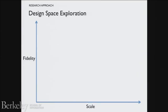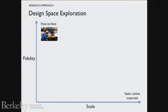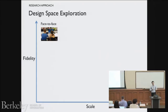The approach I take is an exploration of a design space involving a trade-off between fidelity and scale. On one end, you have high-fidelity face-to-face interaction — you can see someone, see all their emotions — but it doesn't scale. On the other end is what people have done with the first generation of online learning MOOC resources: putting static resources online — videos, digital textbooks, PDFs, course materials. That scales well but is fairly low fidelity.